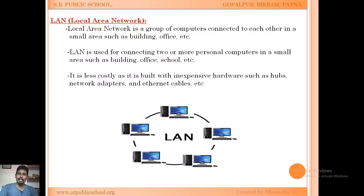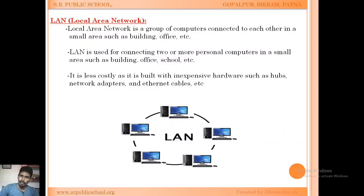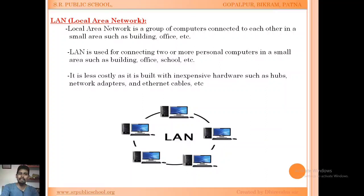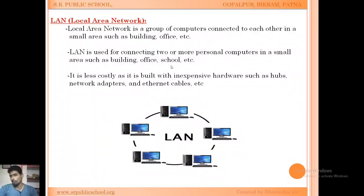LAN is a small network — for example, a building with 2 or 3 floors where computers are located and connected to each other. We need to use a network to connect them, and this will be a Local Area Network. LAN is used for connecting two or more personal computers in a small area such as a building, office, or school.